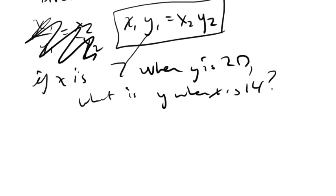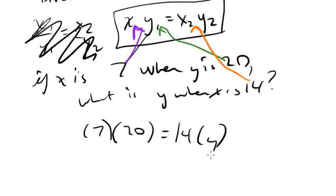Here's x1, here's y1, and here's x2. Let's plug those in: 7 times 20 equals 14 times y. So 140 equals 14y, which means y equals 10. That's your answer for this problem.